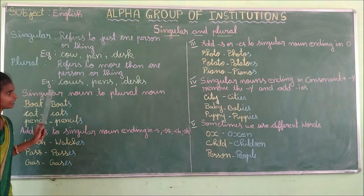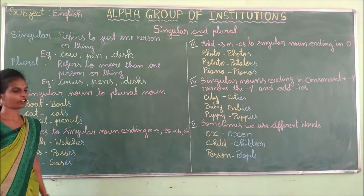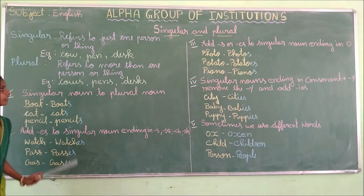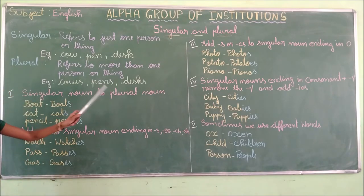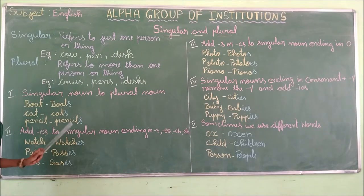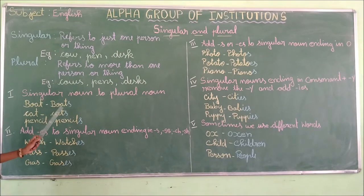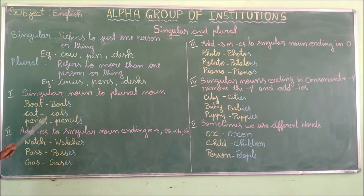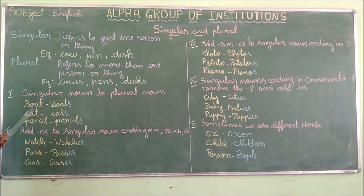Let us see the rules of singular and plural. First rule: singular noun to plural noun — we add S. Boat→boats, cat→cats, pencil→pencils. Repeat it with me: boat, boats.